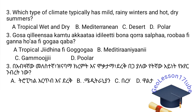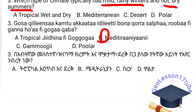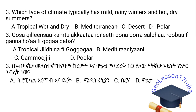The answer choices are: A. Tropical wet and dry. B. Mediterranean. C. Desert. D. Polar. Which one is the correct answer? The best and correct answer is Mediterranean. B. Mediterranean region is known for mild rainy winters and hot dry summers.